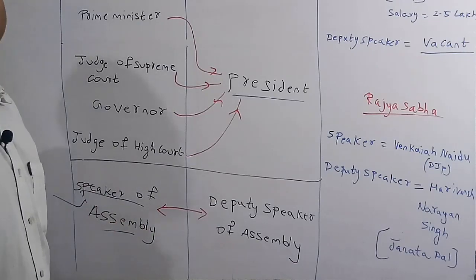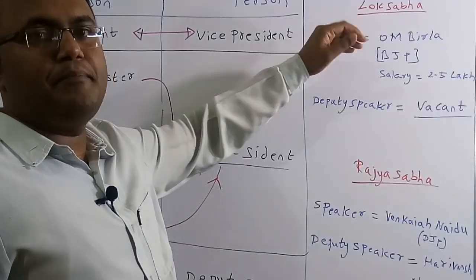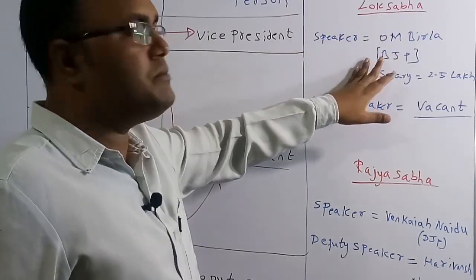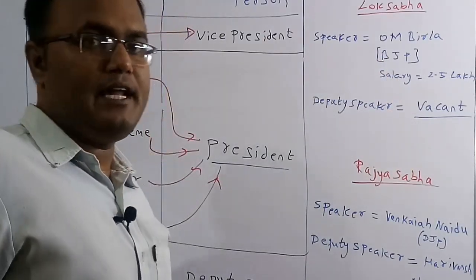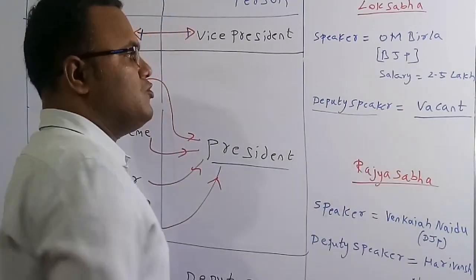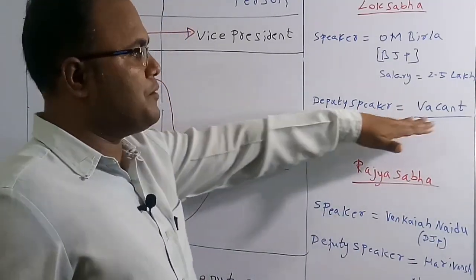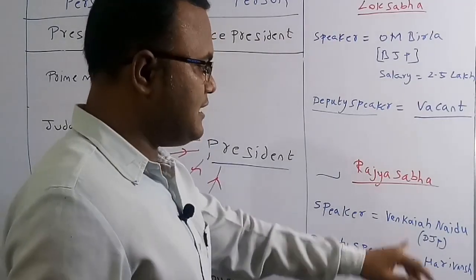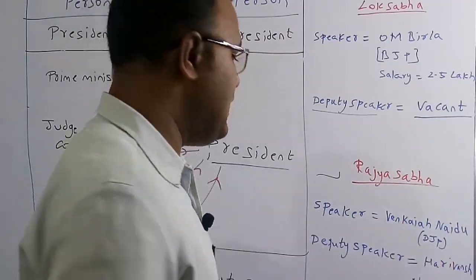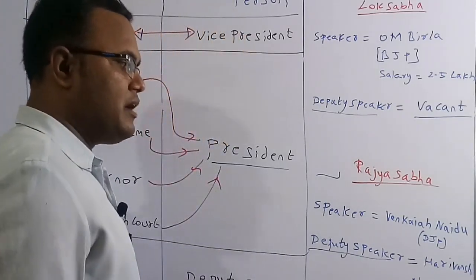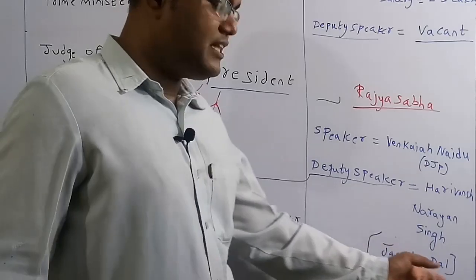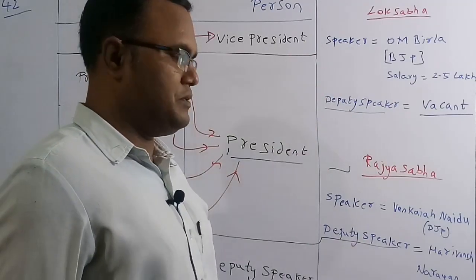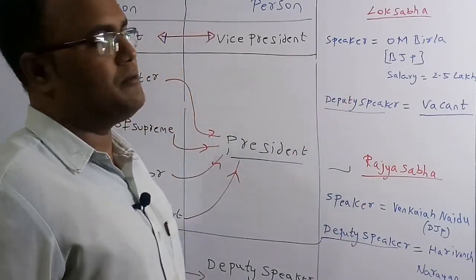The present speaker of the Lok Sabha is Om Birla, who belongs to the BJP party, with a salary of 2.5 lakh per month. Currently the deputy speaker post is vacant. For the Rajya Sabha, the present speaker is Vice President Venkaiah Naidu of BJP, and the deputy speaker is Harivansh Narayan Singh of Janata Dal. Remember these for competitive examinations.